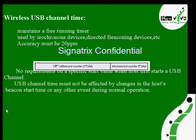Next we are going to see about wireless USB channel time. There is a mechanism to maintain the channel time — it maintains a free running timer used by isochronous devices. The MMCs and the wireless USB channel time will be included. The host sends data for a particular device at a particular time, and there should be synchronization between host and device. Based on the time the host started sending data, the device will synchronize its timer. This free running timer is used by isochronous devices, directed beckoning devices, etc.